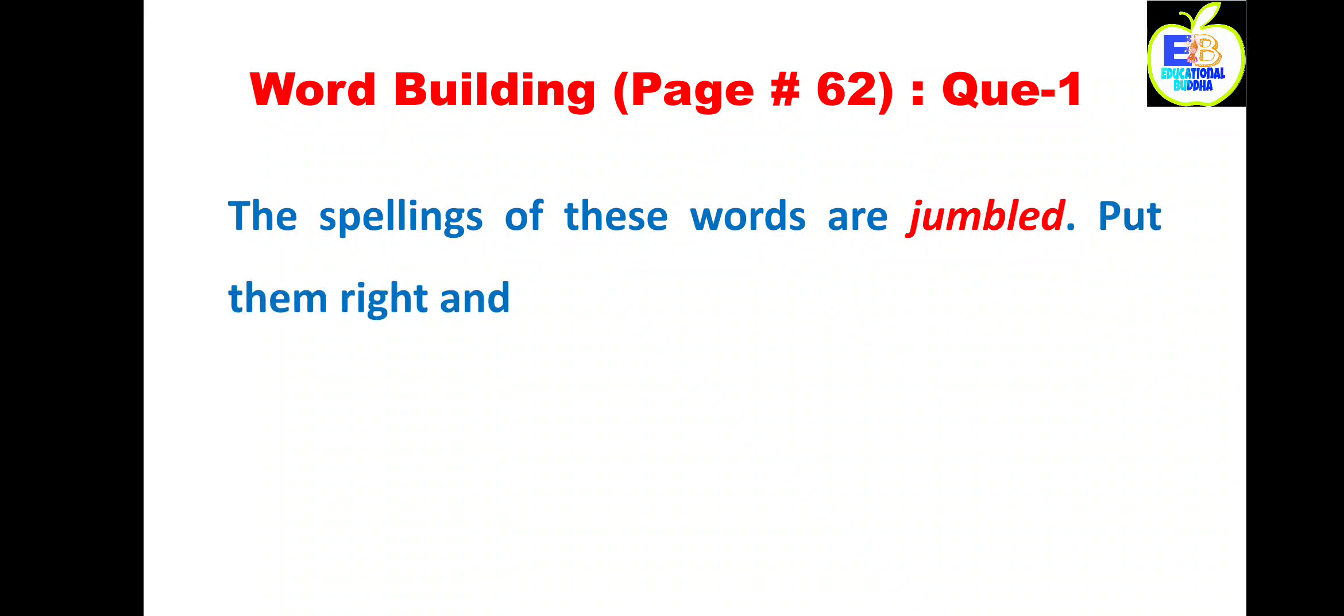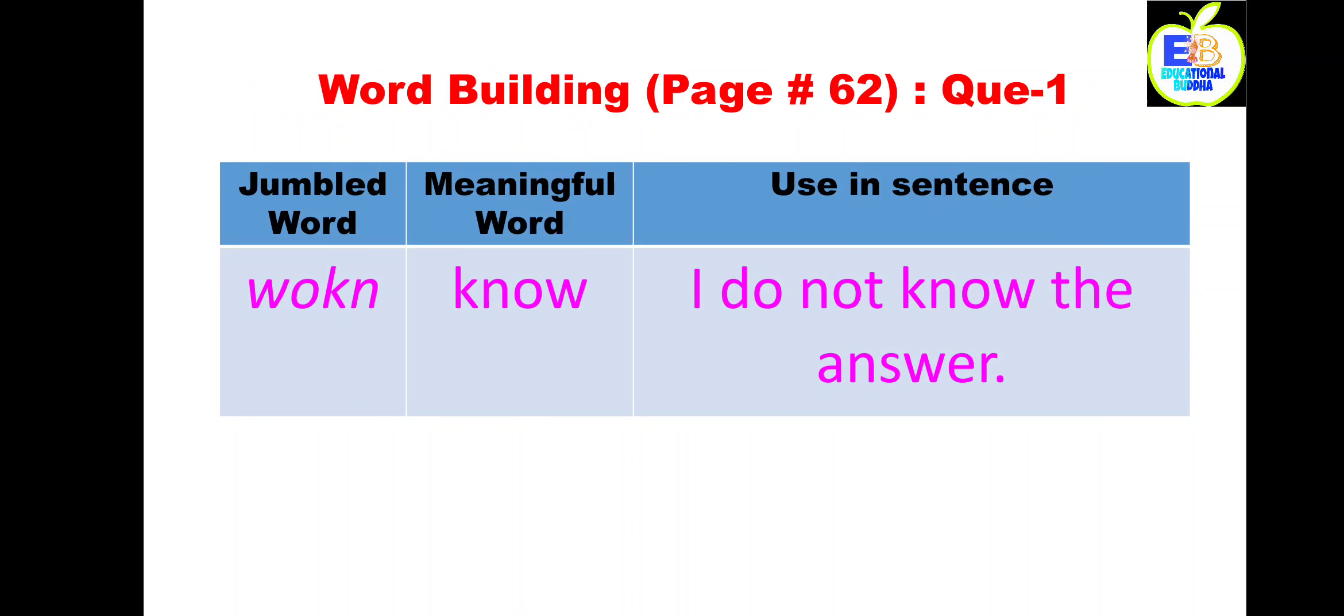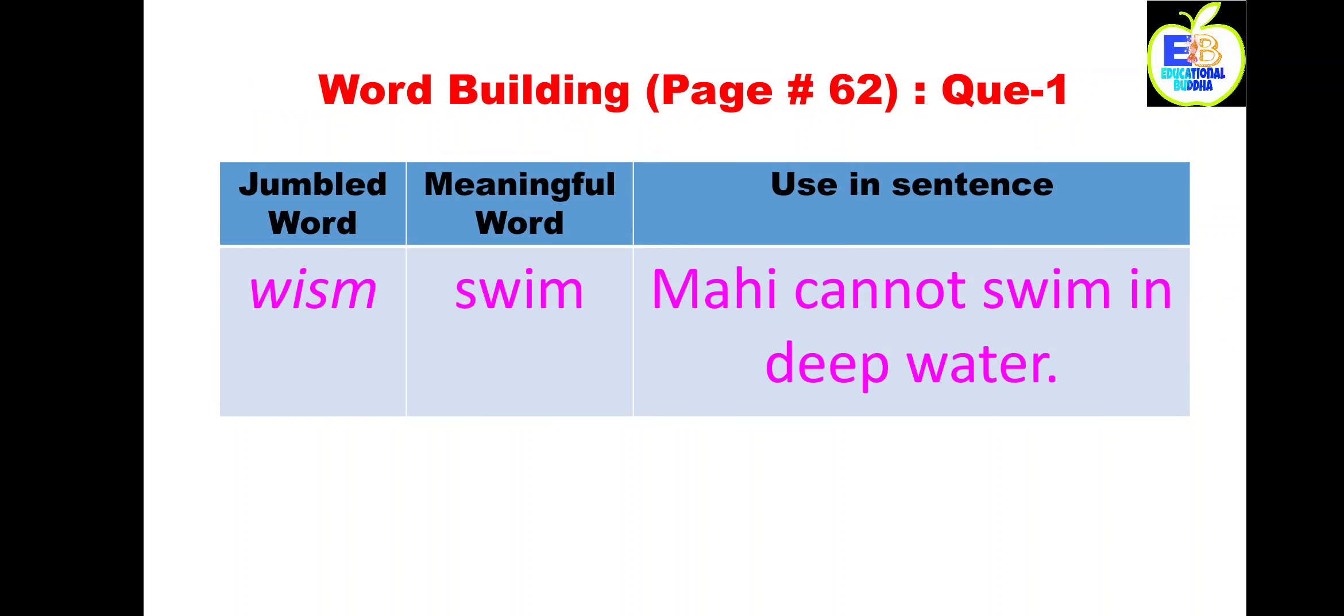Question number one continues on page number 62. The spellings of these words are jumbled. Put them right and make sentences of your own. So first jumbled word is w-o-k-n and we can make a meaningful word from these letters: k-n-o-w. And the sentence of know: I do not know the answer. Next jumbled word w-i-s-m, and the meaningful word of these jumbled words is swim, s-w-i-m. And the sentence is: Mahi cannot swim in deep water.